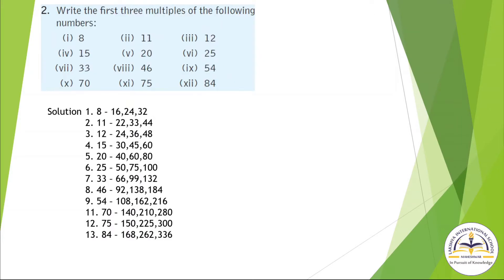Question No. 2: Write the first 3 multiples of the following numbers. First, 8. First 3 multiples means you multiply with 2, 3, 4. 8 × 2 = 16, 8 × 3 = 24, 8 × 4 = 32. In the same manner, you have to solve this question.